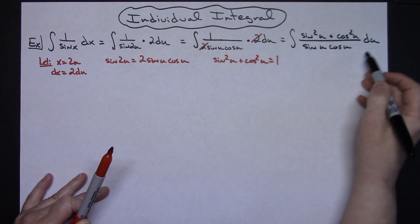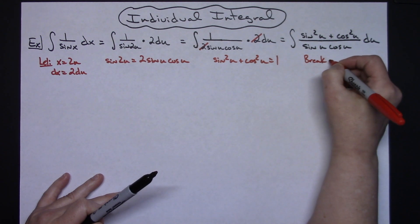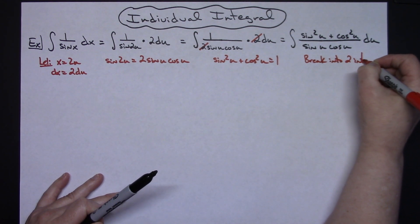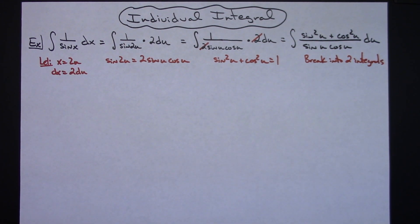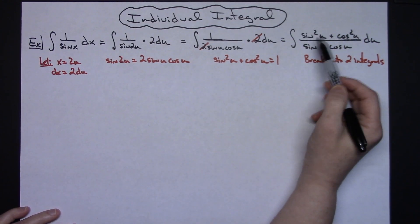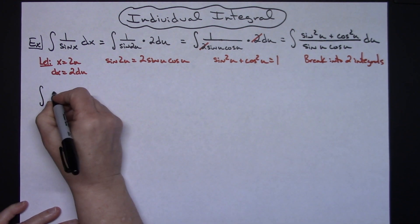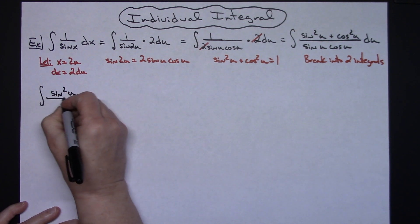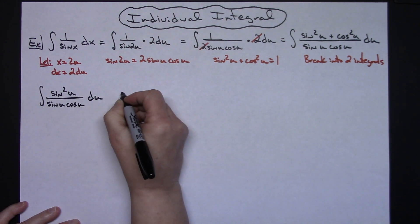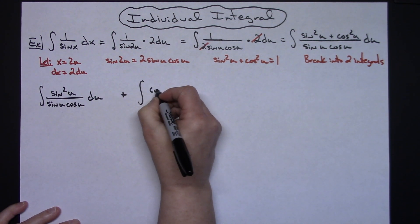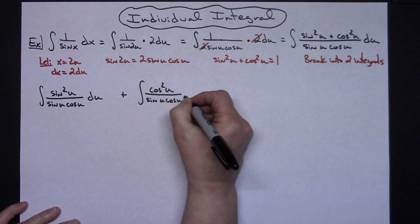Now at this point I'm going to break it into two integrals. So I'm going to come all the way over here because it may take that many lines here. So I'm going to take this and I'm going to break this up into two integrals. It's going to be really simple because I got an addition there on the top. So I'm going to have the integral of a sine squared u all over a sine u cosine u du plus the integral of a cosine squared u all over the sine u cosine u du.